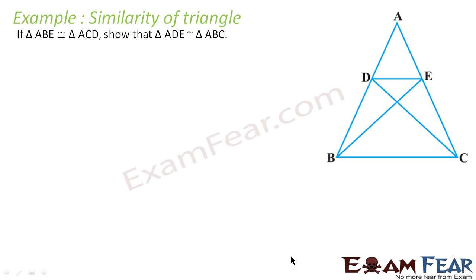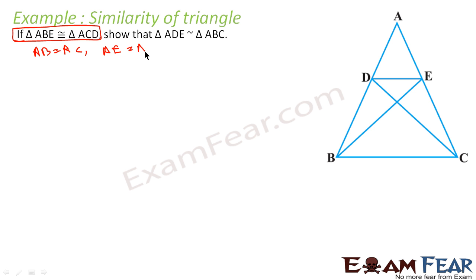Let's check one more example. Here we are given that triangle ABE is congruent to triangle ACD. We have to prove that triangle ADE is similar to triangle ABC. From the congruence, we can get AB equal to AC, AE equal to AD, and BE equal to CD.